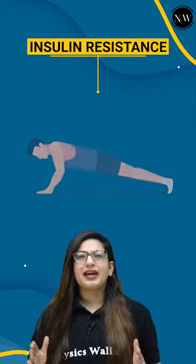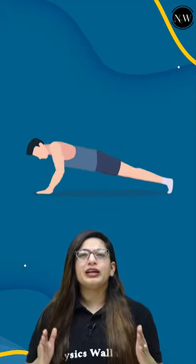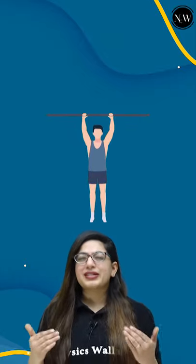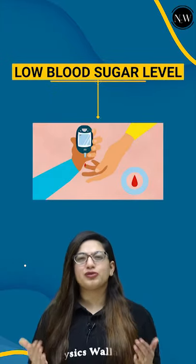Exercise can actually improve the condition of diabetes. Yes, that's really true. When you exercise, your muscle cells start to use your blood sugar, which lowers it.